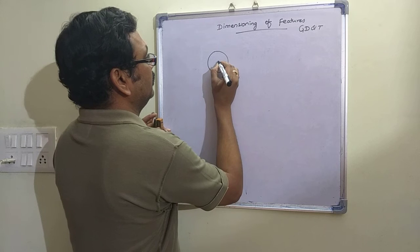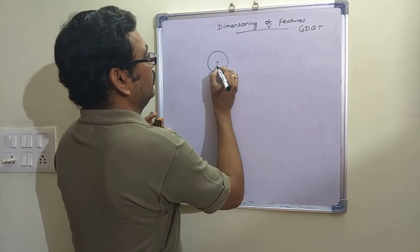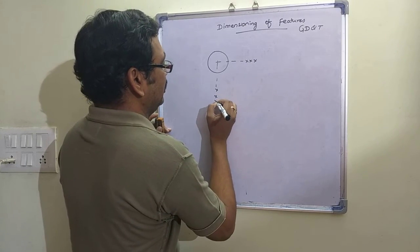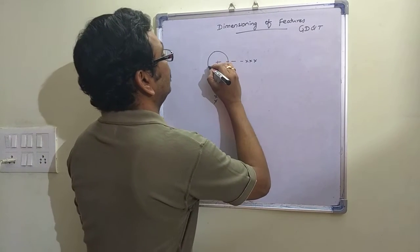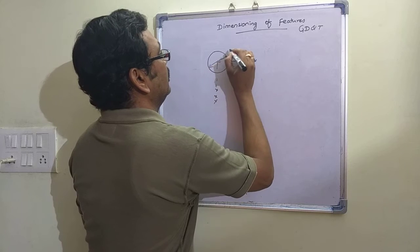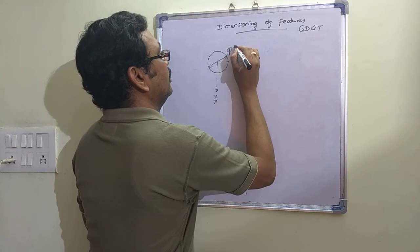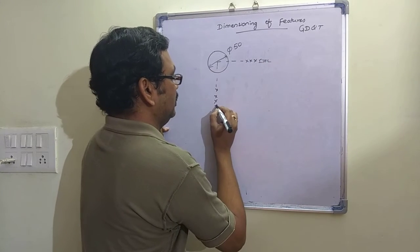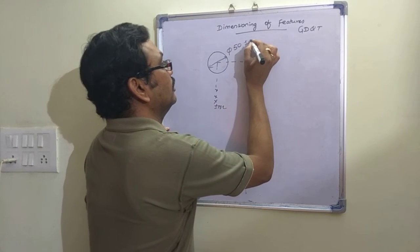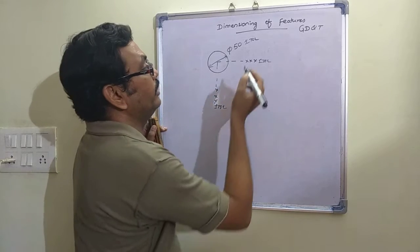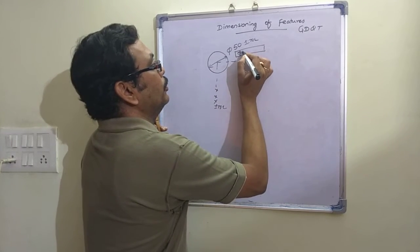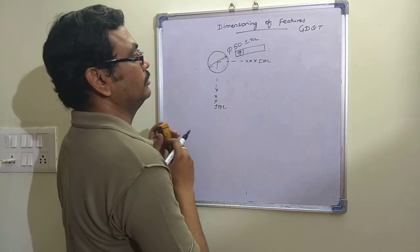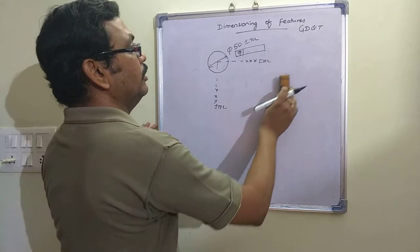For a circular feature, we have to define the axis, the diameter with its tolerance, and the position of the feature as discussed in previous sessions.